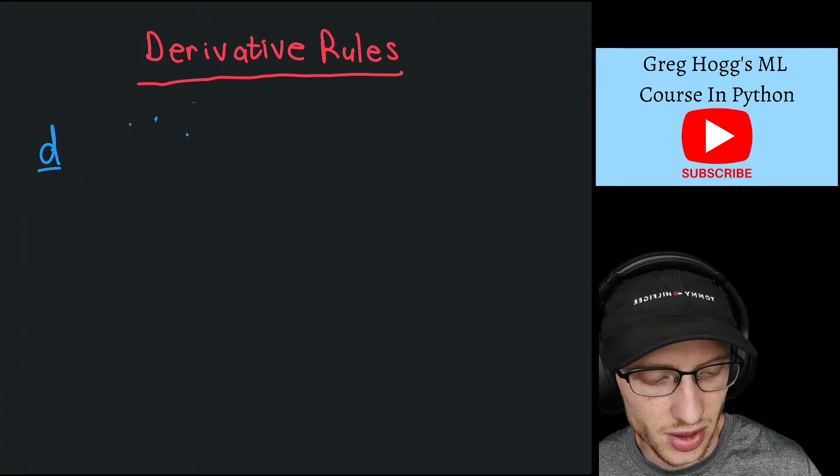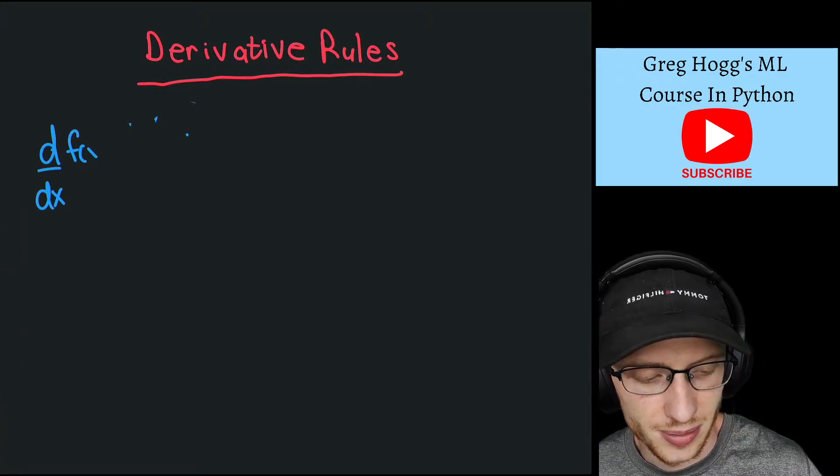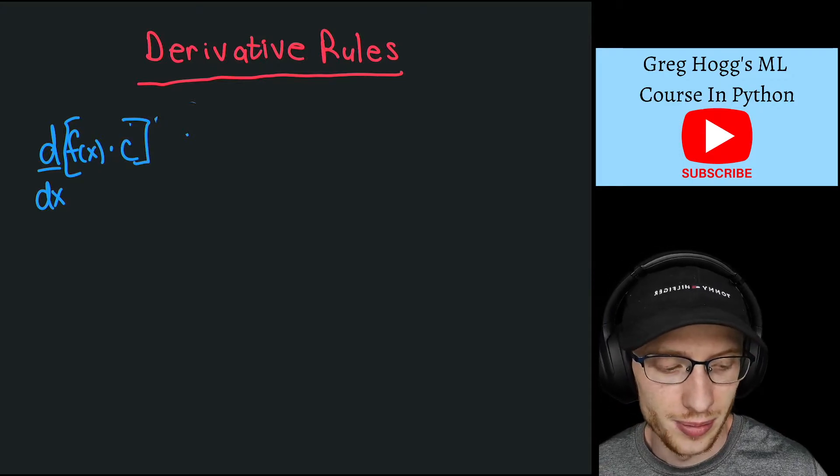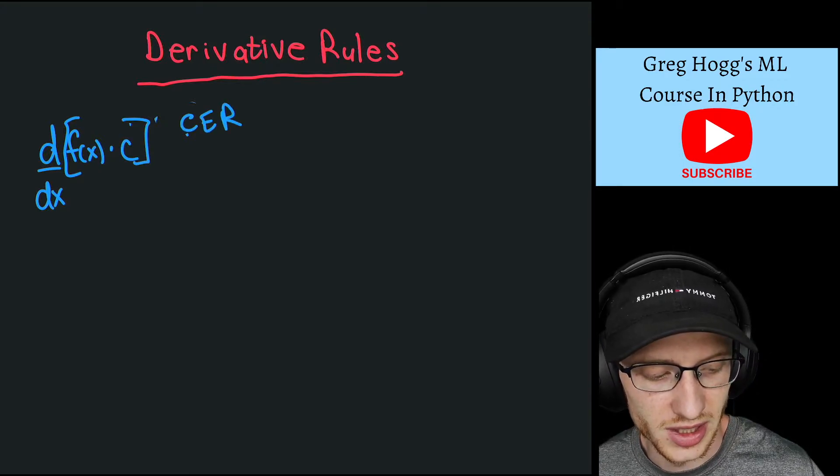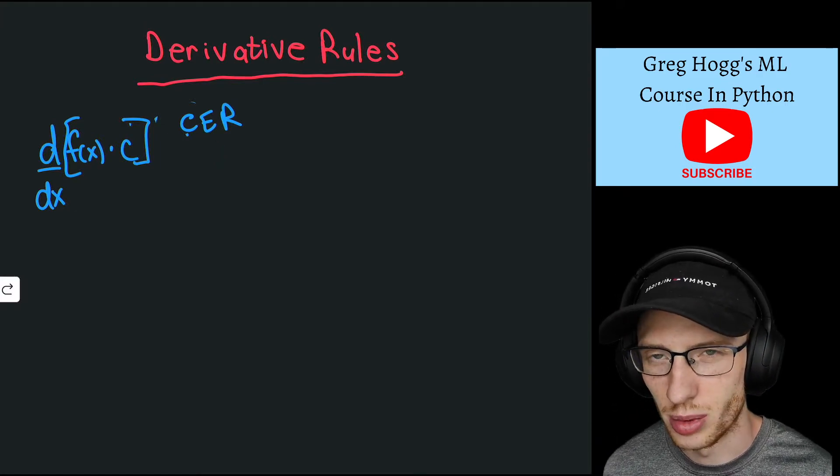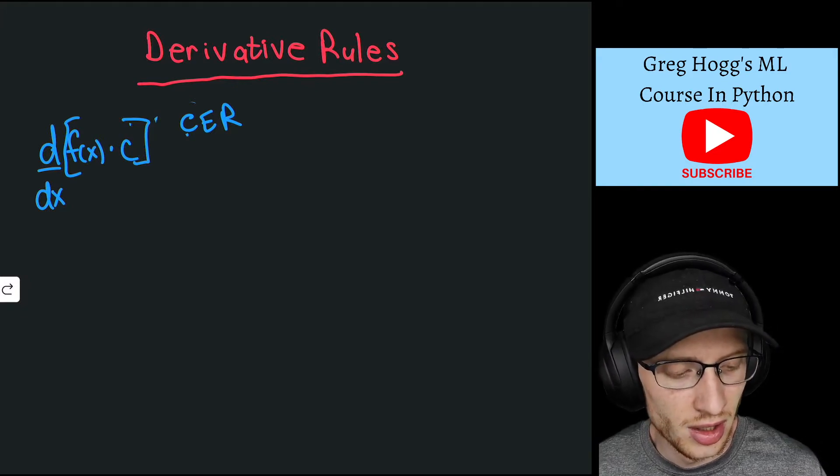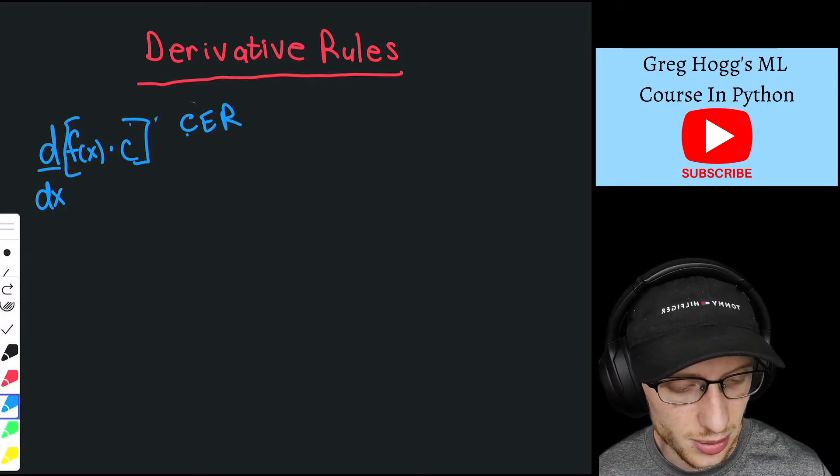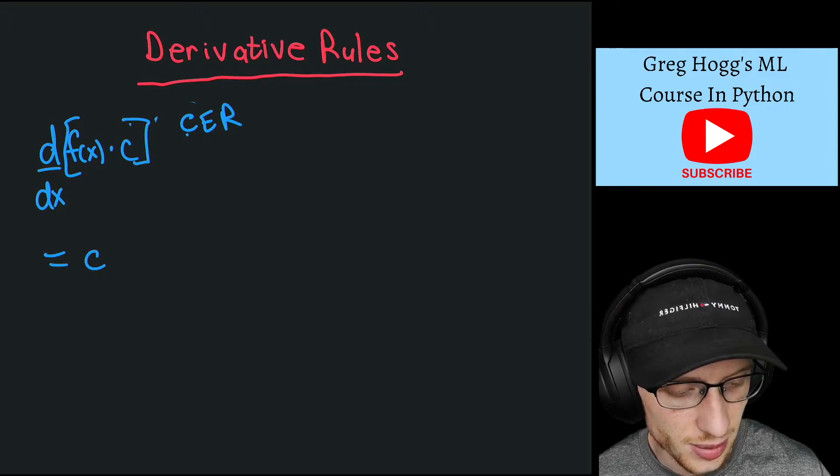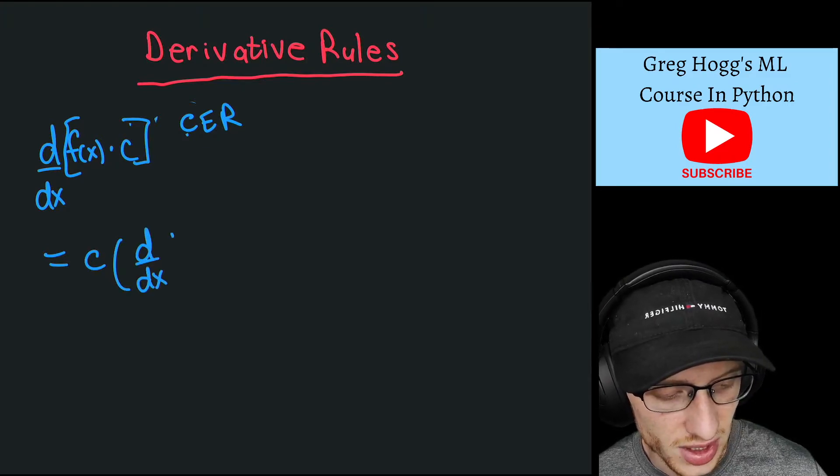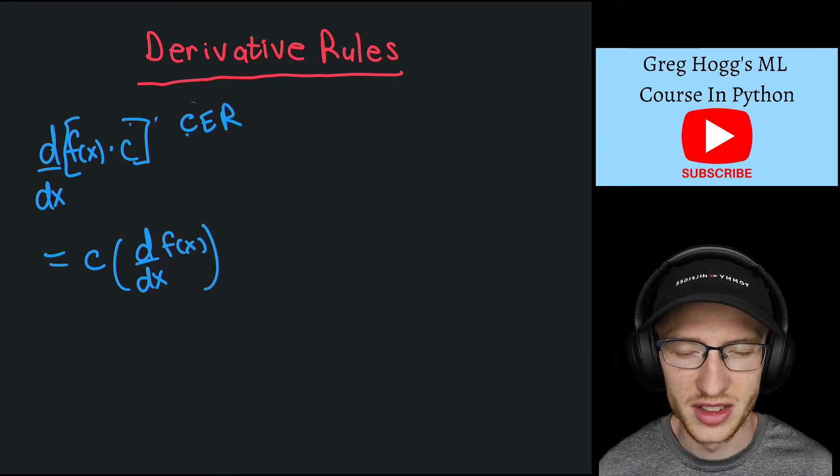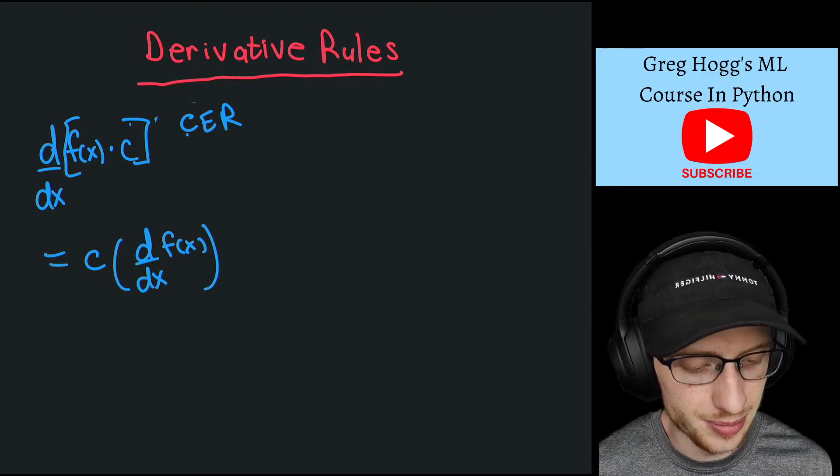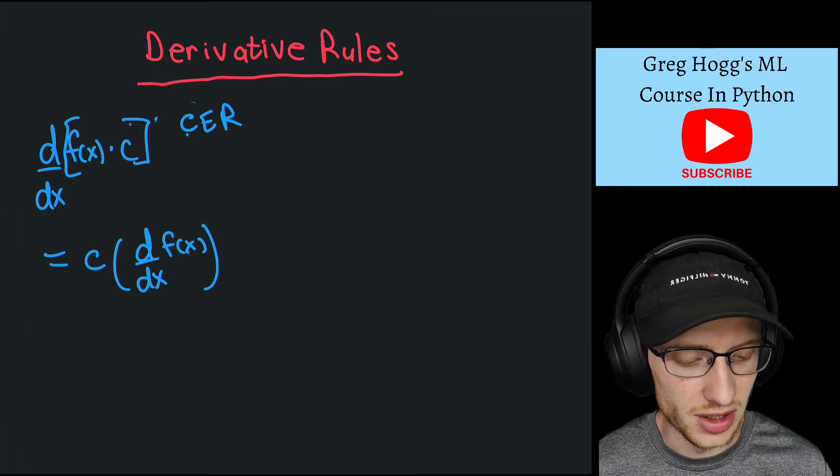The derivative d/dx of c·f(x), where c is a real number (like -0.5, 0.25, or a million), turns out to equal c times d/dx of f(x). What this says is: ignore the constant, take the derivative of f(x), then multiply by c. That's the constant rule.